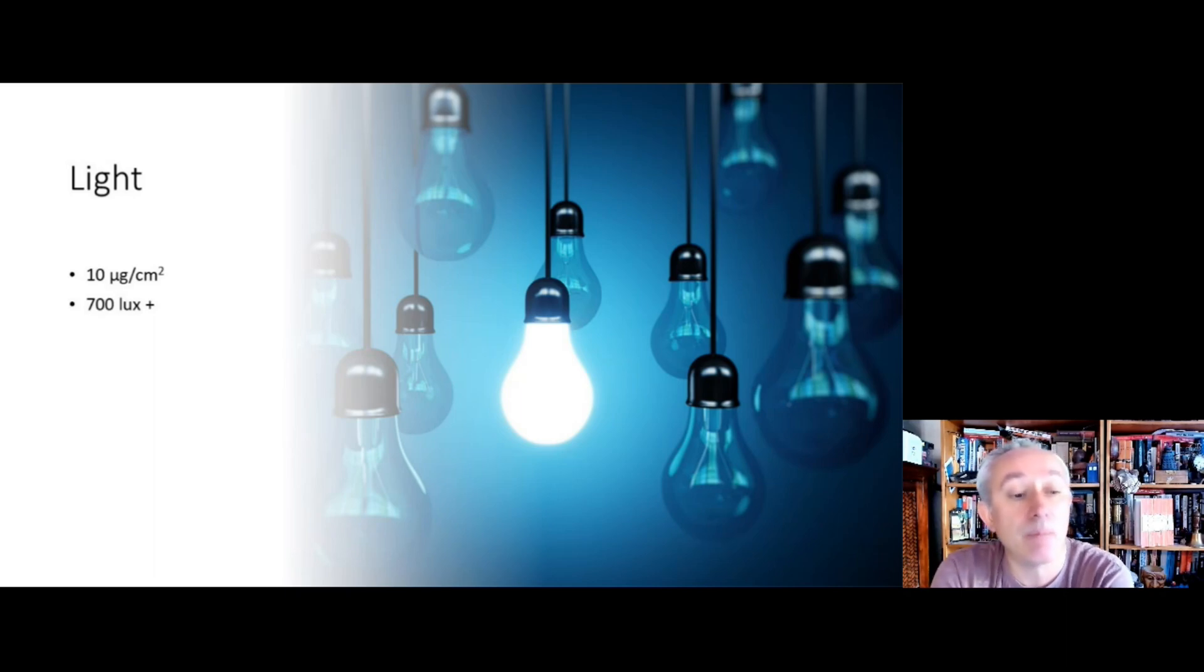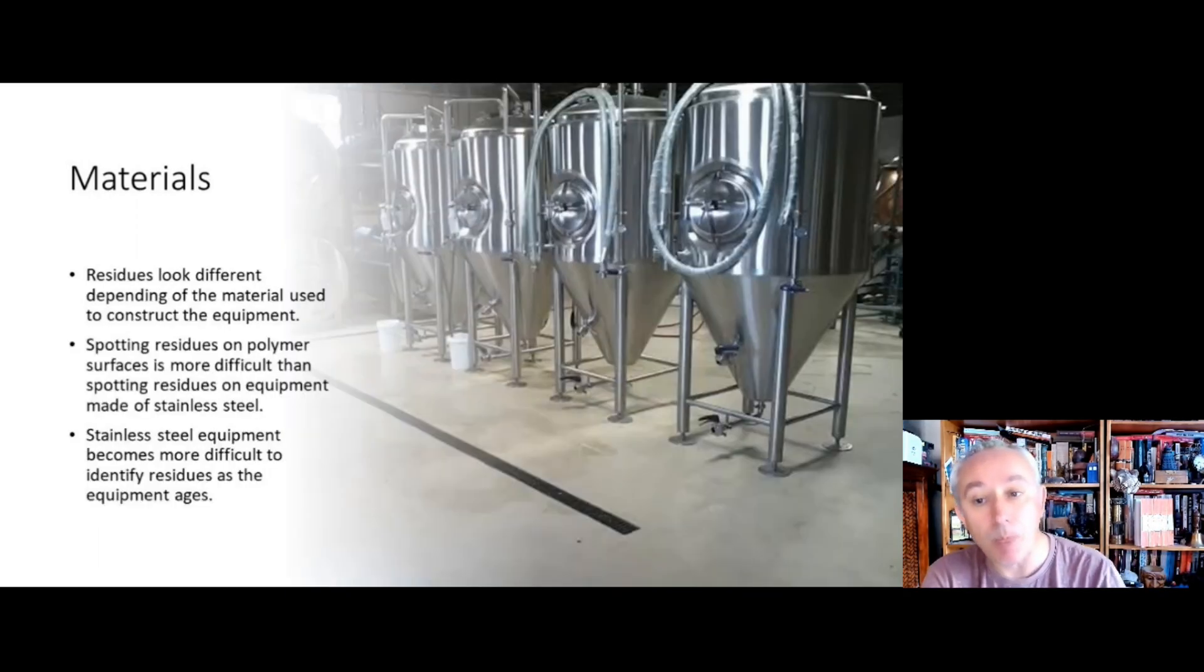We need to bear in mind what we can actually see. Generally, if we have good eyesight, we can just about make out around 10 micrograms of a residue per square centimeter of surface. That's kind of what we're meaning by visually clean. We can't see anything above that, either for the powdery-like substance or for the smears and spots that we've just discussed.